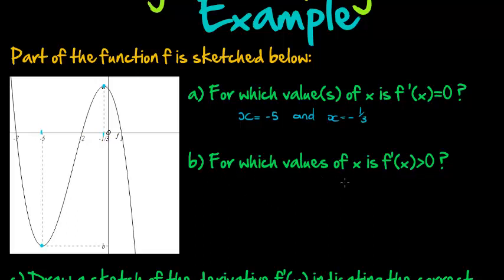For which values of x is the derivative greater than 0? Now when a number is greater than 0, it means it's positive. If the derivative is positive, it means the gradient is positive. So the question is actually asking, for which x-values do we have positive gradients?